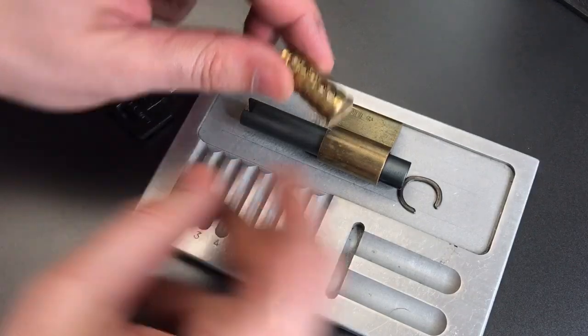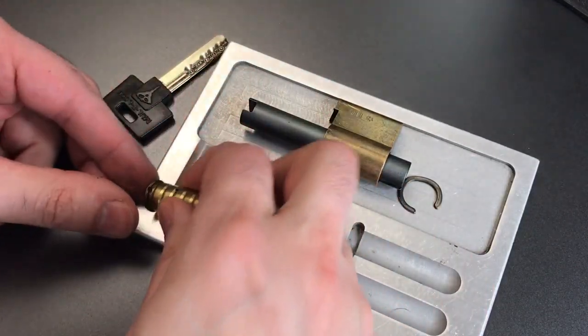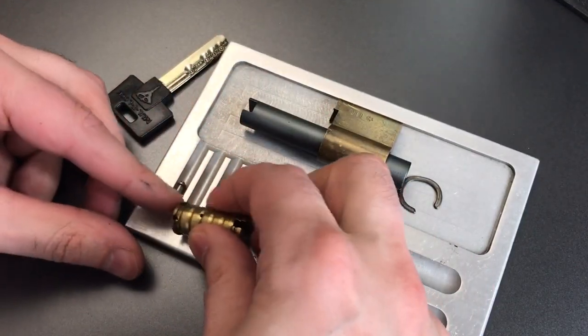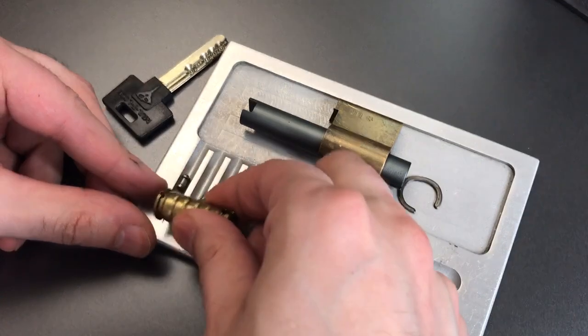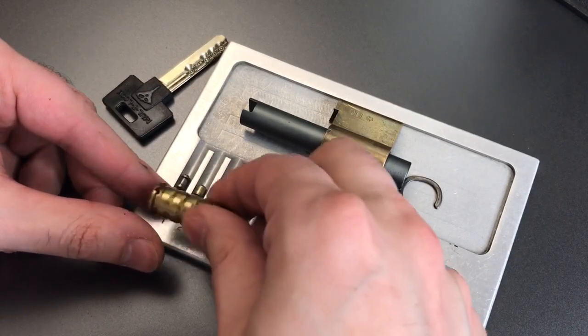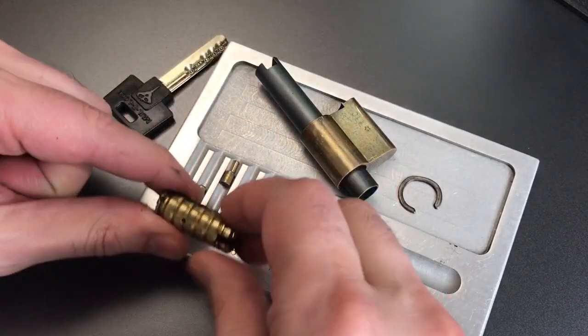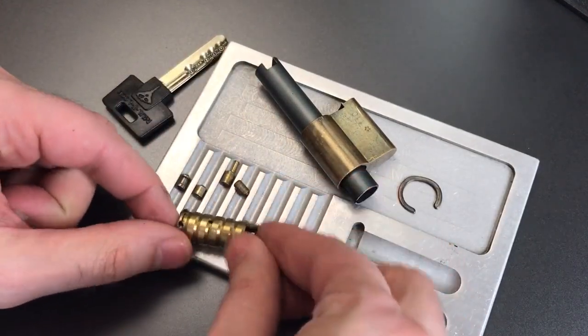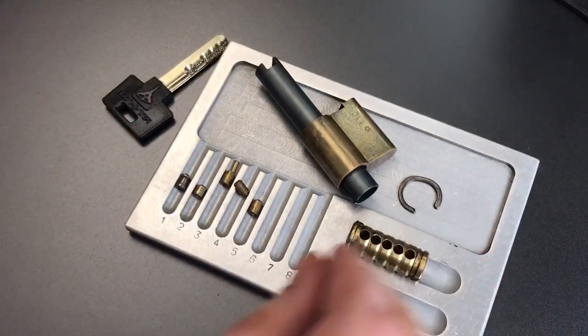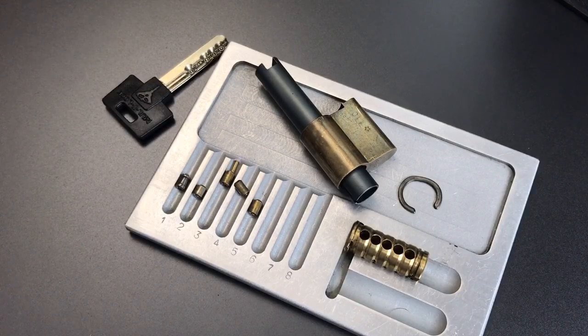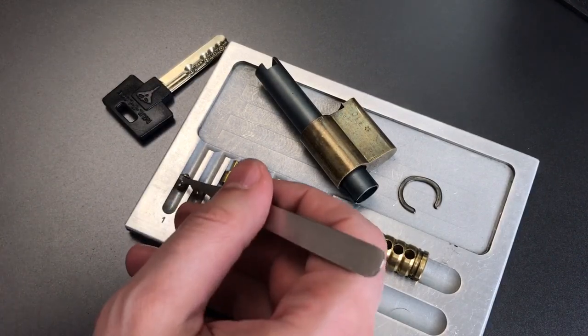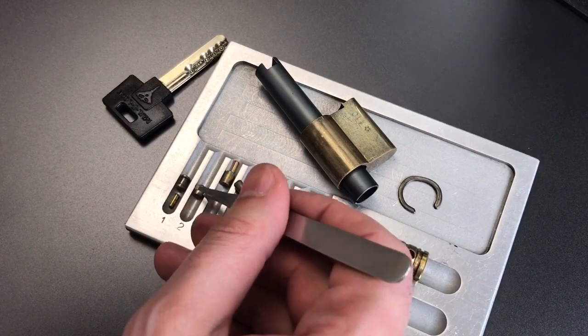Let's dump these key pins out first. A really deeply spooled outer pin on 1, 2 appears to be standard. 3 is standard, 4 is standard, and 5 is standard. Let's arrange all of these pins, and then I'll get the driver pins out.